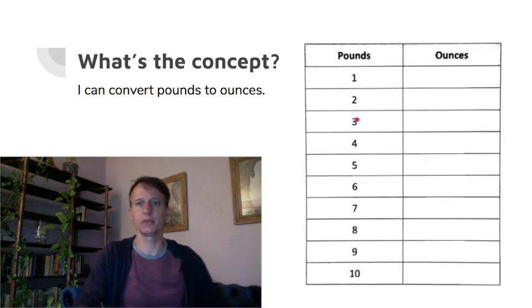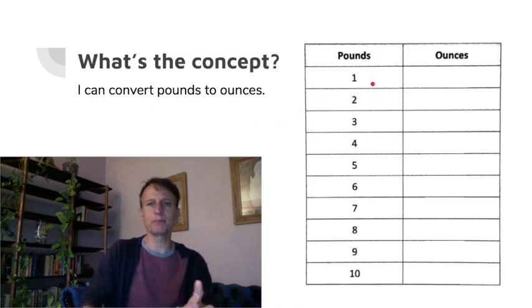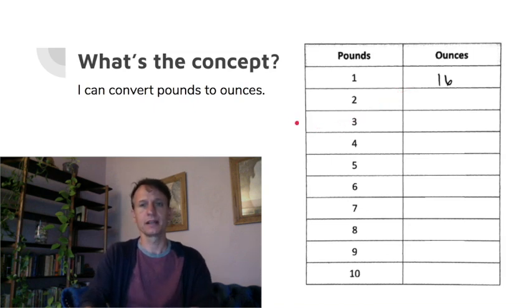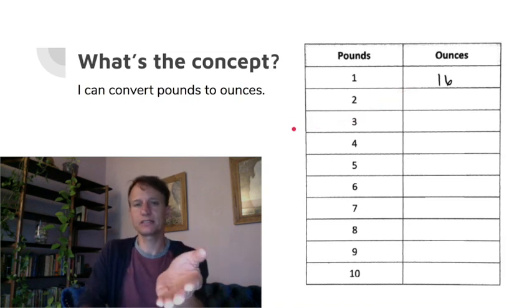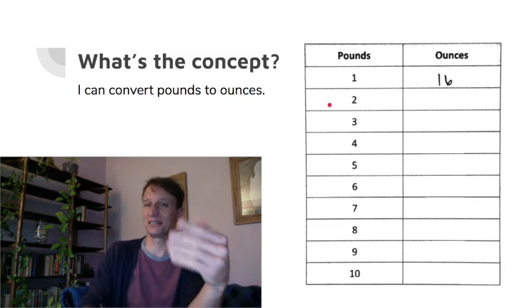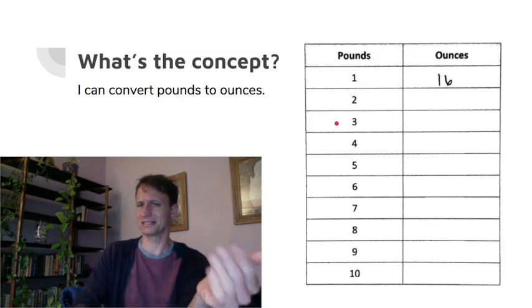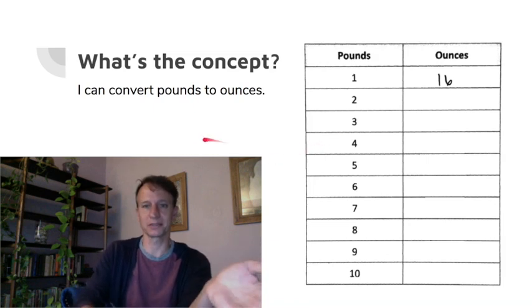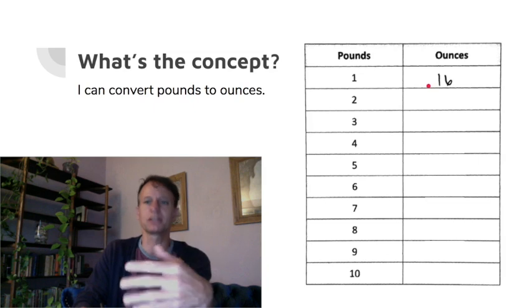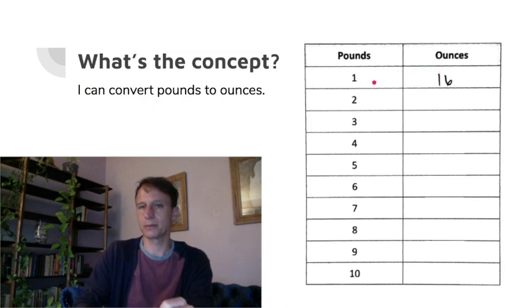Now let's get into the juice — pounds and ounces! You have a table like this on your practice sheet. One pound is sixteen ounces — that's just the way it is. This system is now called the customary system. When I was young they called it the English system, even though Great Britain was already off it and using metric. Then it was called the American system, but now it's just called the customary system because it's come down through us as a custom.